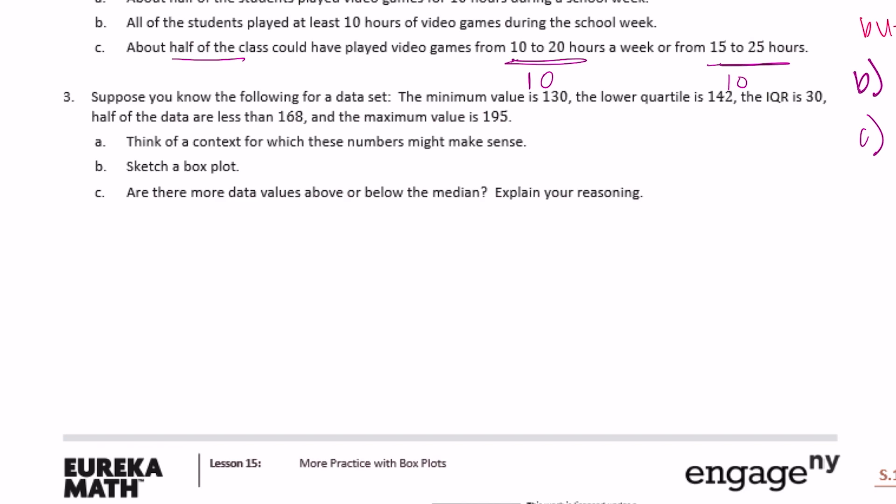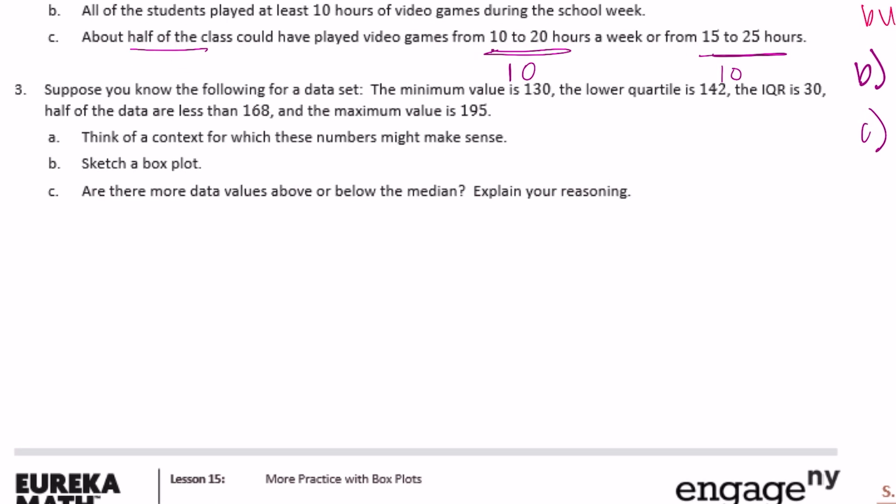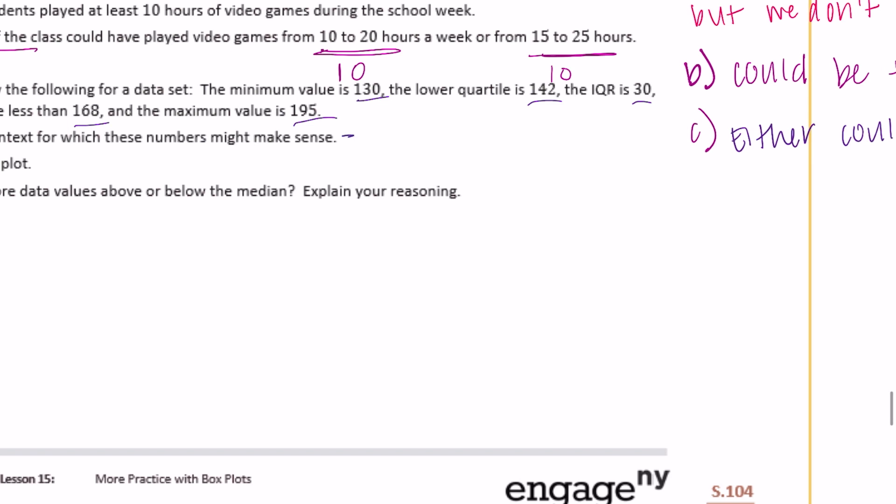Number three: suppose you know the minimum value is 130, the lower quartile is 142, the IQR is 30, half of the data are less than 168, and the maximum value is 195. Think of a context where these numbers might make sense. The answer key's example is the number of calories in a serving of fruit. You could also say calories in a snack like potato chips, or the number of yards a player ran in a football game. I'll go with calories in a serving of fruit.